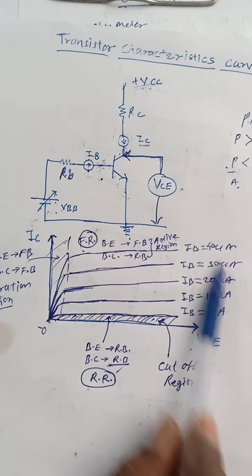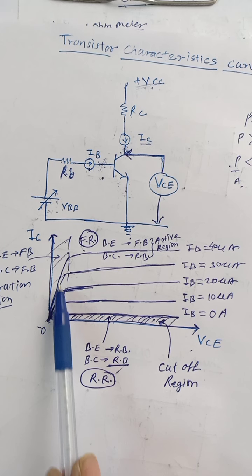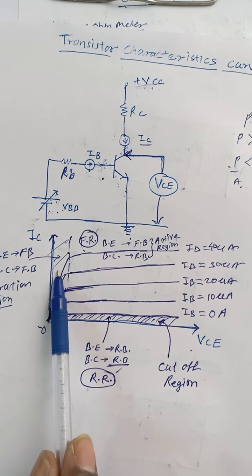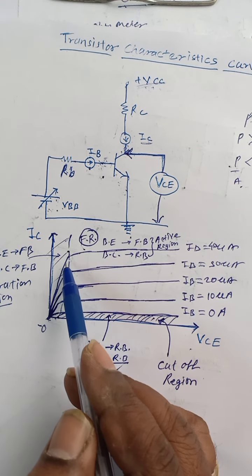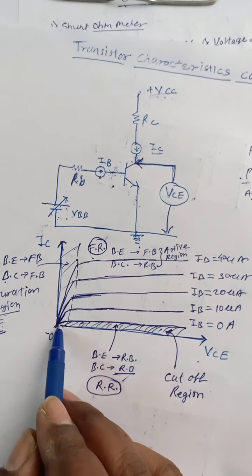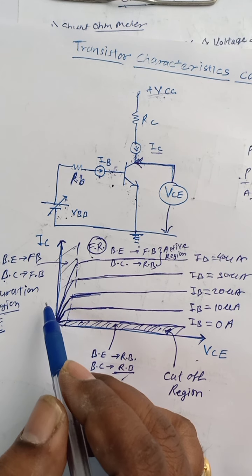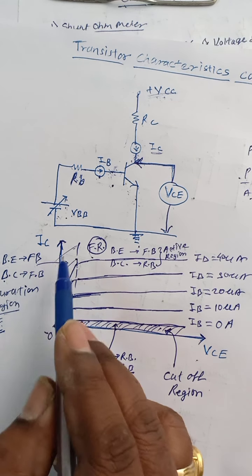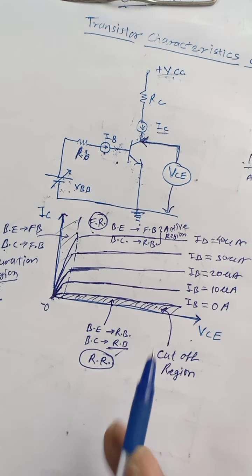This total characteristic is divided into three different regions. The first one is the saturation region, where the transistor acts like a fully-on closed switch, because there is a sharp increase in collector current with a small increase in base voltage. Here both base-to-emitter and base-to-collector junctions are in forward bias — FF condition. When base voltage is 0, that is IB is 0 ampere, both junctions are reverse biased — RR condition — and this region is known as the cut-off region.